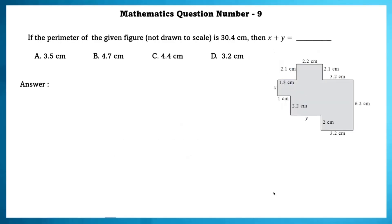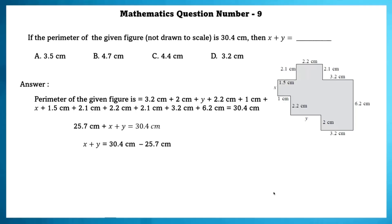Mathematics question number 9. If the perimeter of the given figure not drawn to scale is 30.4 cm then x plus y is equal to? We know all the values except for x plus y. So substituting all the values of the perimeter we can find the value of x plus y that is equal to 4.7 cm.